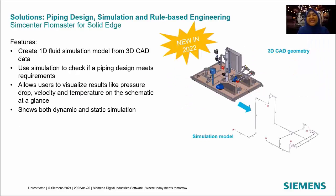The next new feature in simulation is Simcenter Flowmaster for Solid Edge. You can now create 1D fluid simulation models from 3D CAD data and use simulation to check if the piping design meets requirements. It allows users to visualize results like pressure drop, velocity, and temperature on the schematic very fast, and supports both dynamic and static simulation. Let's see the video of this new capability.